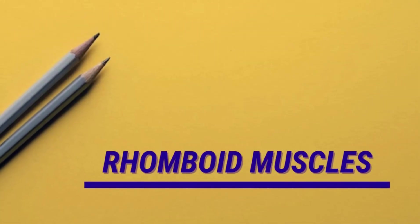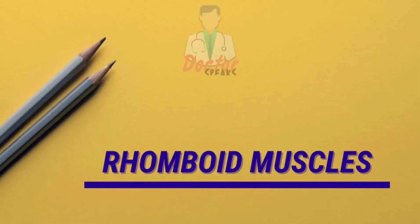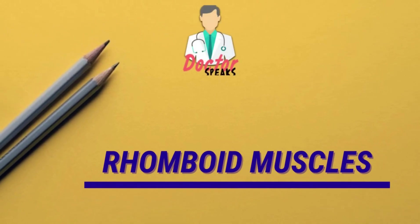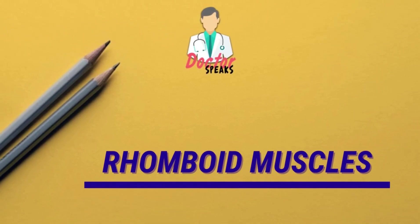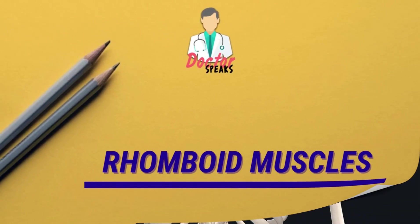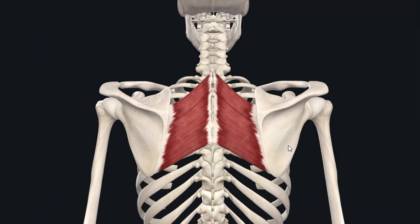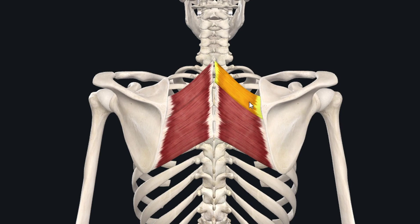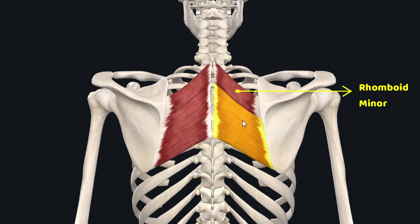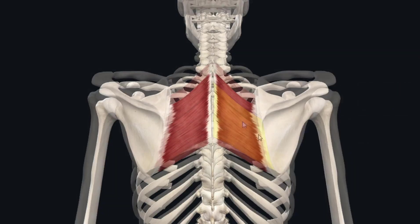Hello weavers, welcome back. Today we will study the anatomy of the rhomboid muscles. The rhomboid muscles are these two superficial extrinsic muscles of the back. This one on the upper side is the rhomboid minor, and this one just inferior to it is the rhomboid major muscle.